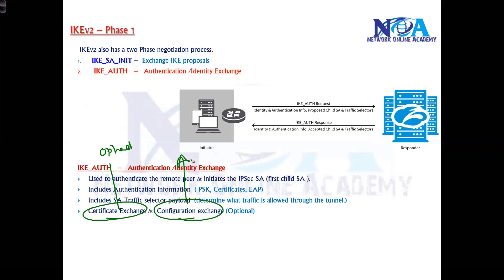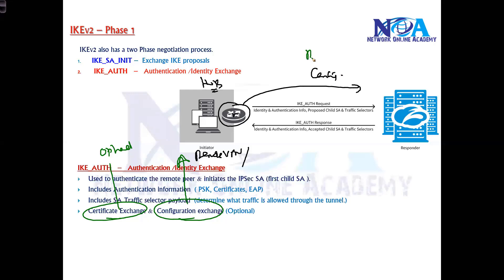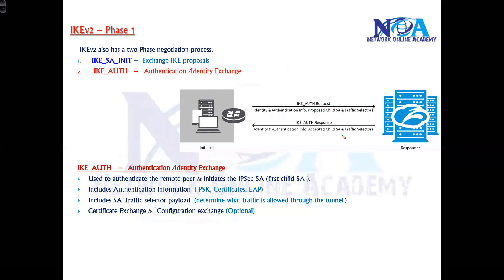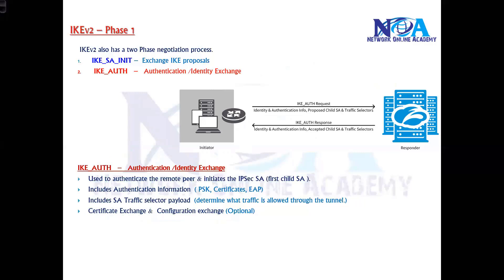There is also an optional configuration exchange message, more common in remote VPNs. This allows a centralized device to push configurations to remote peers — for example, reverse route injection, which automatically installs a specific route to reach back to the main head office when a remote peer connects. This avoids having to configure each remote device individually and is optional depending on the VPN type.